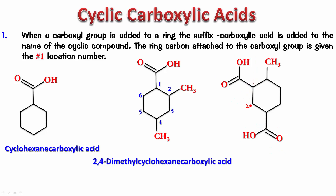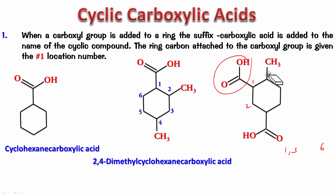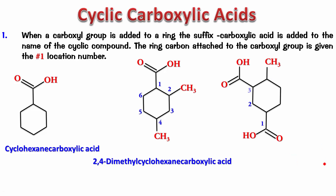If I number 1 through 6 one way, both COOH groups are at positions 1 and 3 and the substituent is at position 6. If I change the numbering direction, the COOH groups are still at 1 and 3 but the substituent moves to position 4. So the second numbering — giving the substituent position 4 rather than 6 — is preferred. Remember that position 1 belongs to the ring carbon bearing the carboxyl group, not the carboxyl carbon itself.